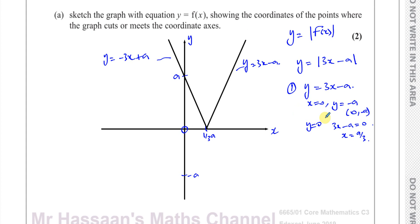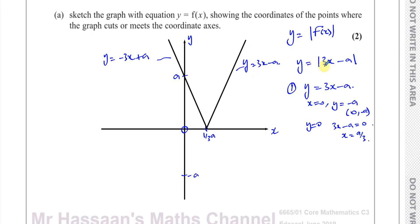There's another case — not in this question — where the modulus is applied differently, giving a V-shape with the vertex on the y-axis; we'll cover that in another video. The second method of sketching is to look at the positive argument y = 3x − a and the negative argument y = −3x + a separately. The negative argument hits the x-axis at the same point (a/3, 0) but hits the y-axis at +a. Drawing both halves together gives the same V-shape.